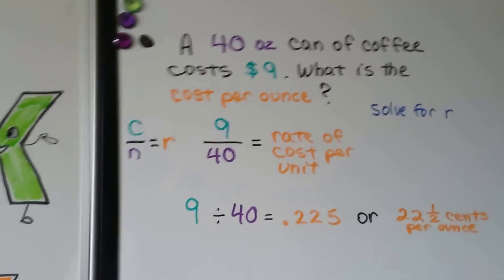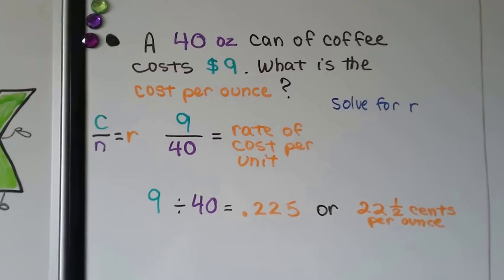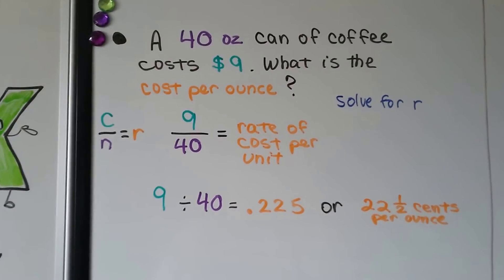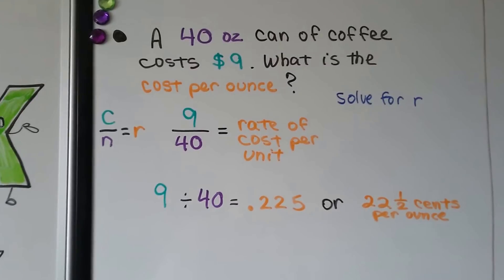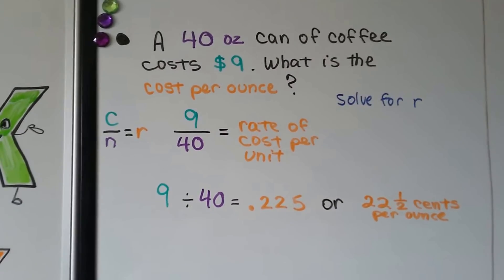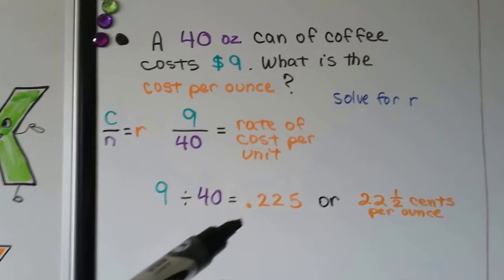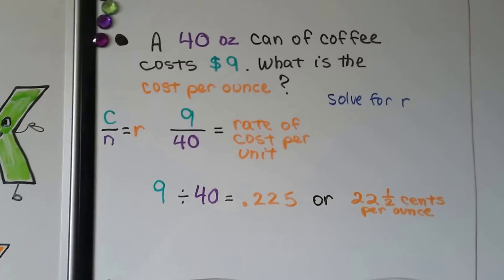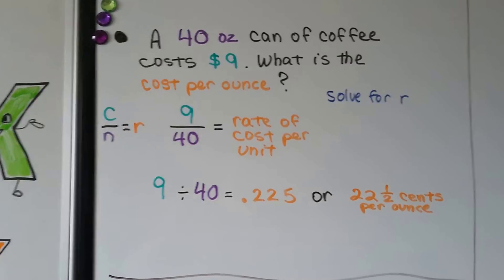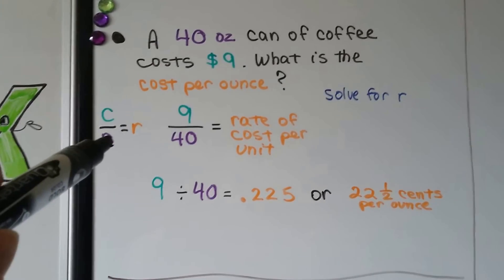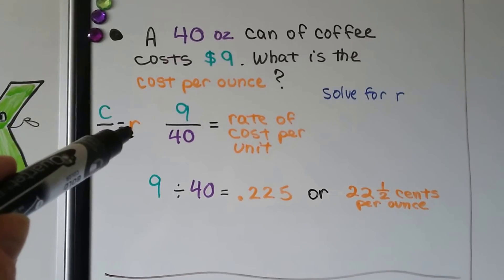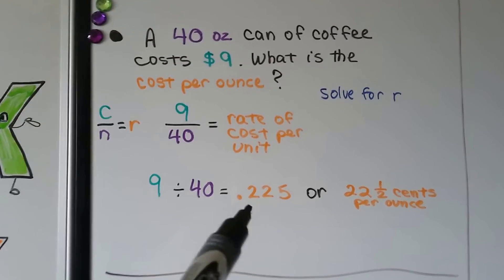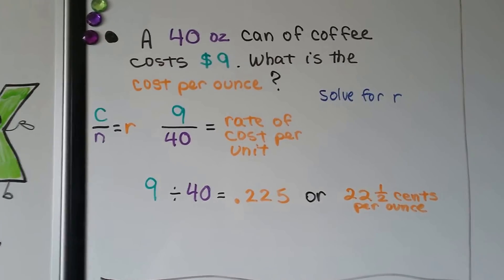You'll probably see in the store on the price labels on the shelves, it'll say cost per unit, or cost per ounce, or cost per gram, or however it's packaged. A 40 ounce can of coffee costs $9. What is the cost per ounce? Well, we just take the $9 and divide it by 40, by the 40 ounces. It comes out to .225. That actually means 22.5 cents per ounce. So what we're doing is, C divided by N equals R. The total cost divided by the number of units, the 40 ounces, is going to equal the rate per ounce. You could even round it up to .23 cents if you wanted to look at it as money. But it does come out to .225 cents per ounce.